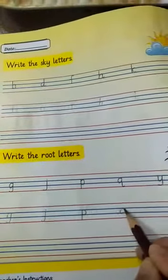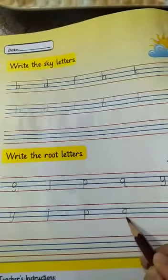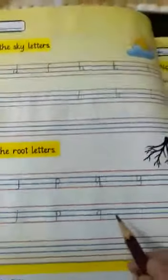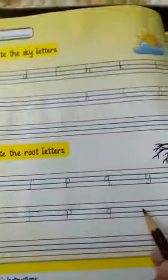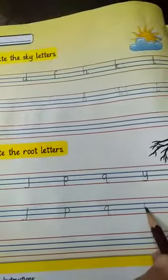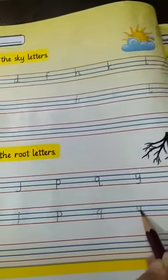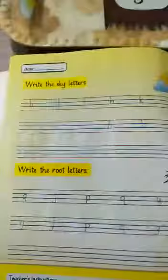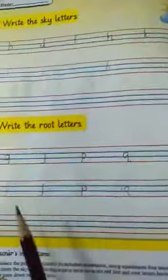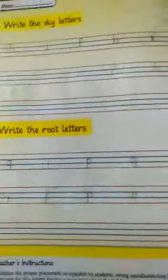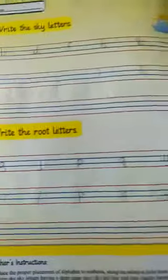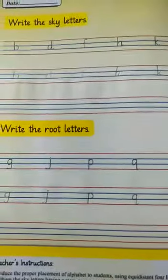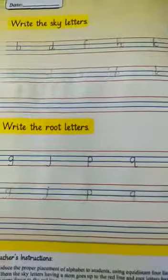Which is a root letter touching the last three lines? Next letter is letter Y. Y is touching the last three lines. These are five letters which are touching the last three lines, and these are the root letters. I hope that you got it. Thank you so much, Allah hafiz.